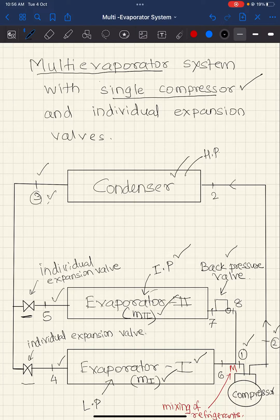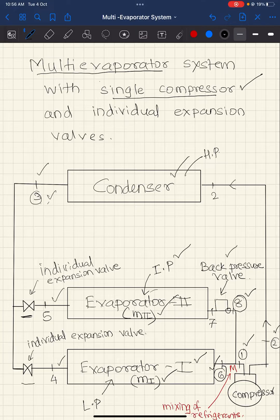To bring the refrigerant from intermediate pressure to the suction pressure, we employ a back pressure valve. It expands the refrigerant from state 7 to state 8, which is a throttling process. At state 8, the pressure becomes equal to the pressure at state 6 — both are now at the lowest pressure in the system. Because the refrigerant at state 8 and at state 6 are at the lowest pressure, they can be mixed at point M, and the mixed refrigerant enters the compressor at the lowest pressure.